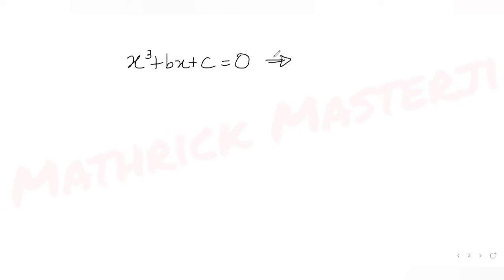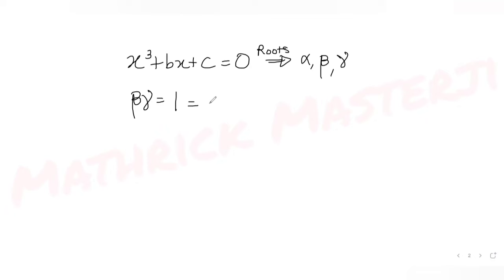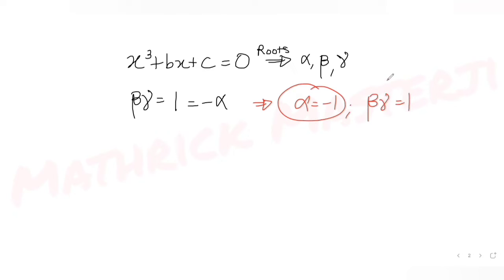We have been given the cubic equation x cubed plus bx plus c equals zero, which has roots alpha, beta, gamma. We are told that beta times gamma equals one, which is also equal to minus alpha. From here, alpha equals minus one and the product of beta and gamma is plus one.